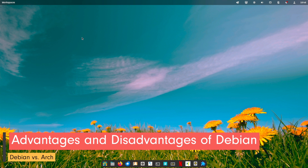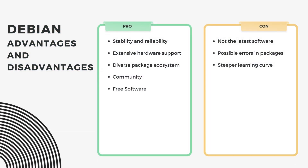Let's look at the advantages and disadvantages of Debian. Advantages: unrivaled stability and reliability, extensive hardware support, diverse package ecosystem, active and supportive community, and strong advocacy for free software. Disadvantages: may lag behind in offering the latest software versions, and some users may face a learning curve due to its comprehensive nature.